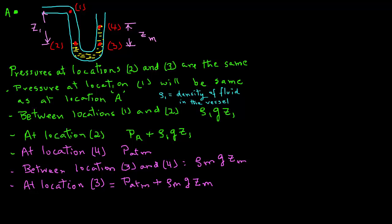Considering that the pressures at locations 2 and 3 are the same because those locations are at the same elevation, we can write our equation as follows: Pa plus ρ1gz1 equals Patm plus ρmgZm.